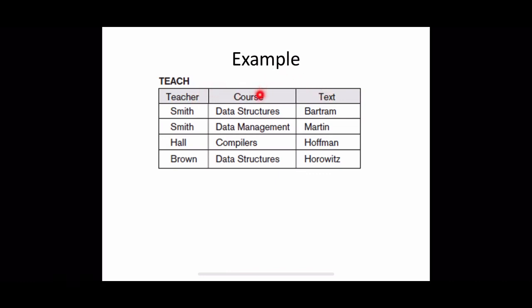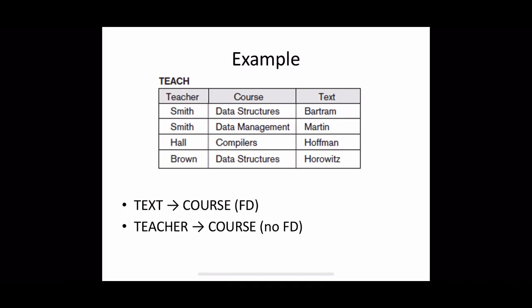To summarize: text → course may exist as a functional dependency in this relation schema. Teacher → course does not exist because we have a counter-example: the same teacher has different courses. Similarly, course → text does not exist because for the same course value 'data structures' we have different textbooks. A single counter-example is sufficient to conclude that a functional dependency does not hold.